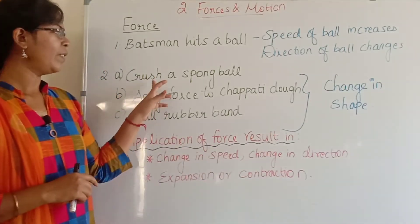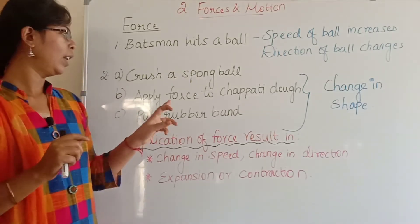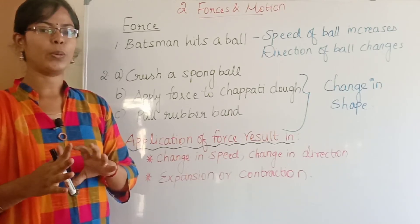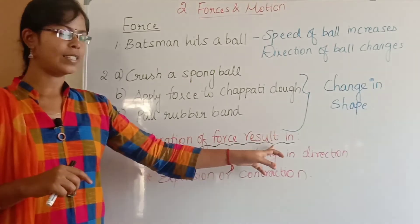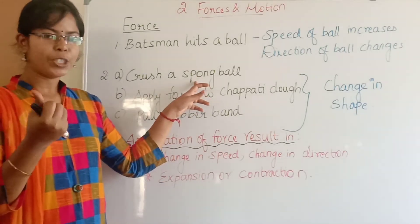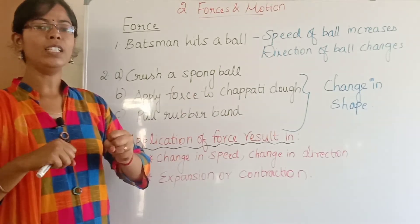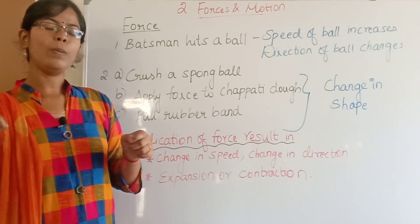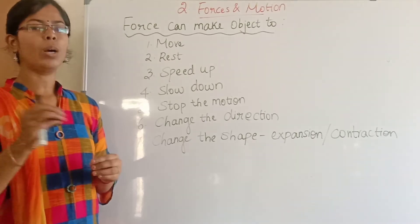Furthermore, when we crush a sponge ball — the sponge ball is round — when we crush it, the shape will change. Similarly, when we pull a rubber band, the rubber band is round but when we pull it the shape will change. So by application of force there is an expansion or a contraction. Crushing the sponge ball causes contraction, and pulling the rubber band causes expansion; when released it returns to the normal position.